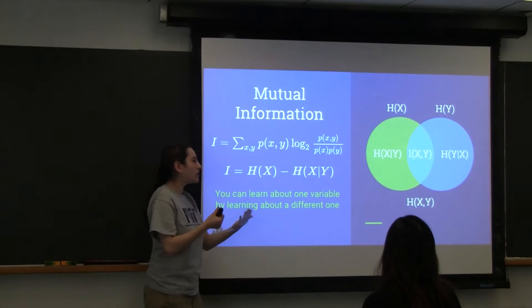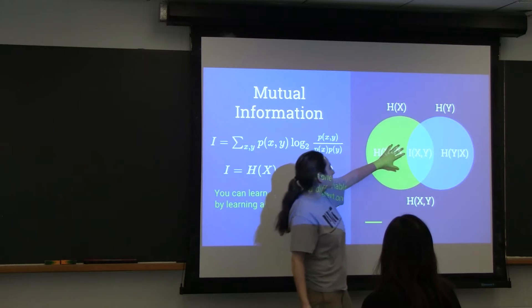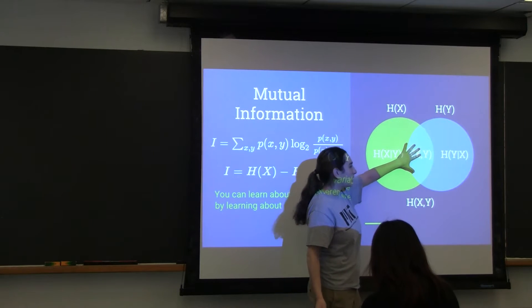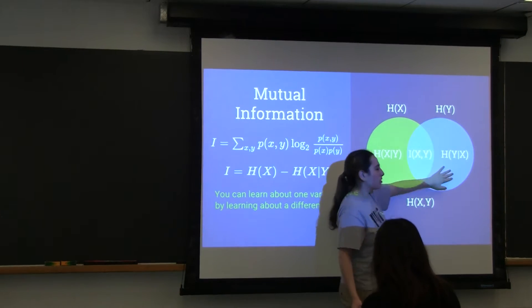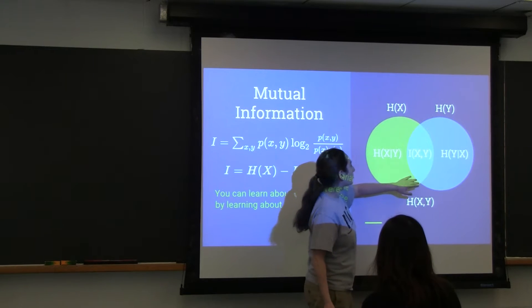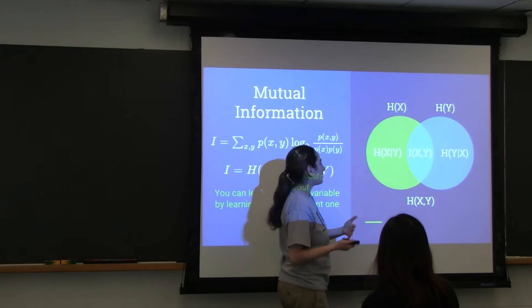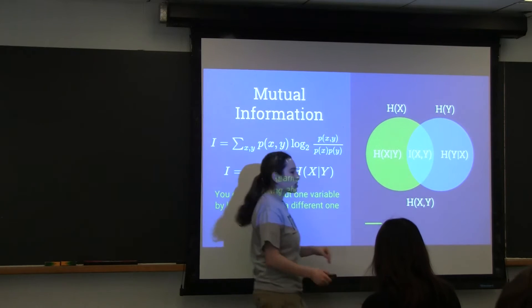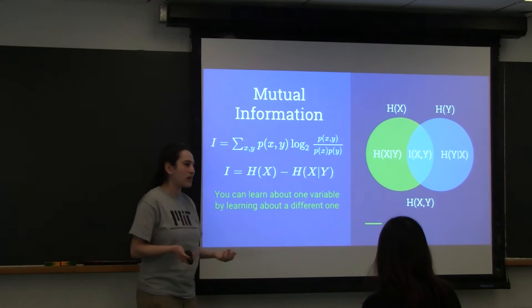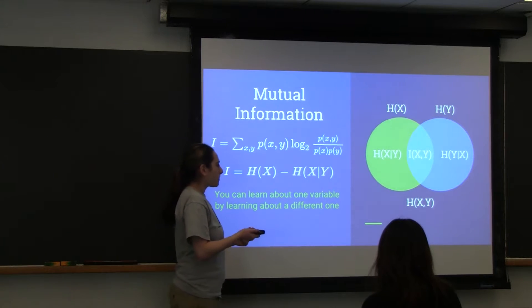If you are given X — say you sampled X and you now know X — then the amount of entropy of Y given X is just going to be this cutout over here. On the other hand, if you are given Y, the amount of entropy left in X given Y is going to be this region. The overlap of the Venn diagram is what's called the mutual information. That's the amount of information that you can gain — the overlap in the information.